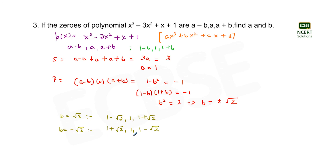We can use both values of b since they don't make any difference in getting the zeros — the zeros obtained by both values are the same. Therefore, the value of a is 1 and the value of b is plus or minus root 2. I hope this question is clear to all of you.